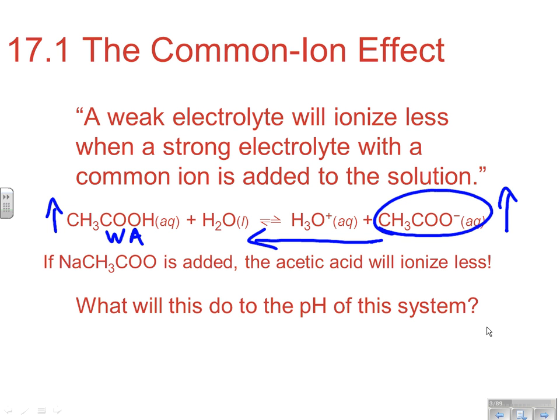What will this do to the pH of the system? If we shift equilibrium to the left, that means this concentration is going to be going down. Since that is measured by pH, and lowering the pH would be increasing acidity, if we're lowering the amount of H3O+, we're going to decrease the acidity. So that would cause our pH to rise.